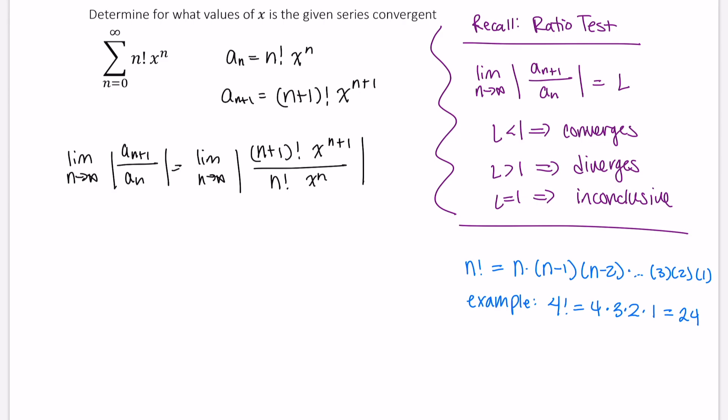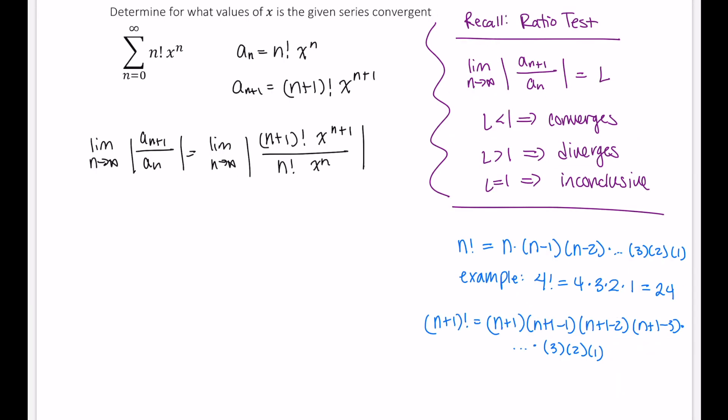All right, so now that we've established n factorial, what is (n+1) factorial? Well, that's equal to (n+1) times (n+1-1) times (n+1-2), times (n+1-3), and then I'm going to keep multiplying until I get to 3, 2, 1. Eventually, you keep subtracting, you'll get to 3, 2, 1.